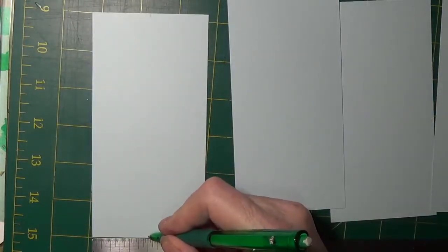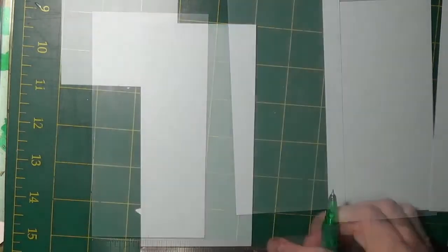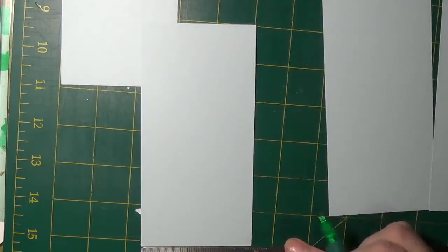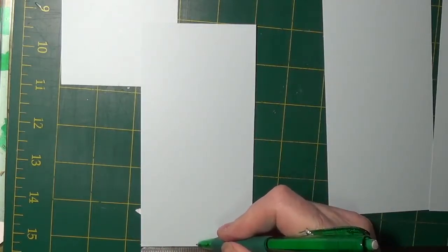Then measure on two pieces of paper a half inch on each side. The other two pieces do not have to be marked.